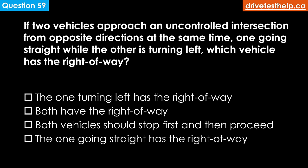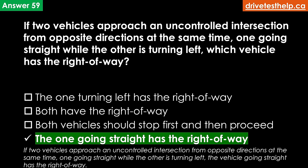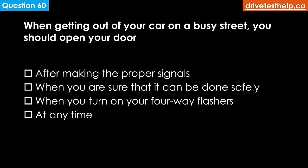If two vehicles approach an uncontrolled intersection from opposite directions at the same time — one going straight while the other is turning left — which vehicle has the right of way? Options: the one turning left; both have the right of way; both should stop first then proceed; the one going straight. The correct answer is the one going straight has the right of way.